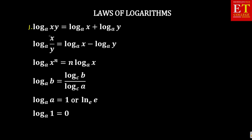Law 1 says: log base A of X·Y. That A there is the base of the log. So if we say X·Y, it means between X and Y there is a dot — in other words, a multiplication sign. So log base A of X times Y is the same as log base A of X plus log base A of Y.